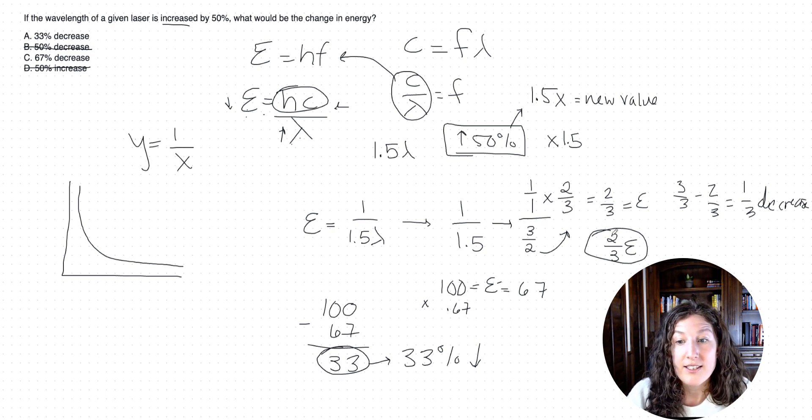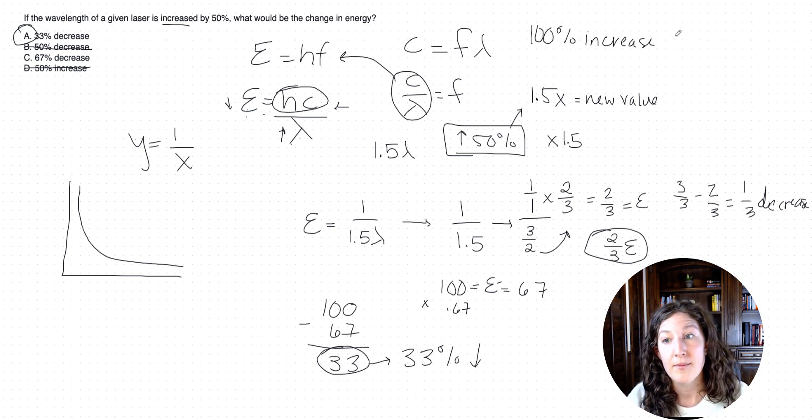All right, so just recognize that if we got two-thirds of the original value, what we decreased by was one-third, and that would be A. So I hope this helps. I hope this recognizes that you do need to practice with what these percentage changes mean. If it said 100% increase, what that means is we took our original amount and doubled it. So it'd be 2x. So playing around with what these relationships mean can be incredibly helpful for your quick math and your mental math on test day.